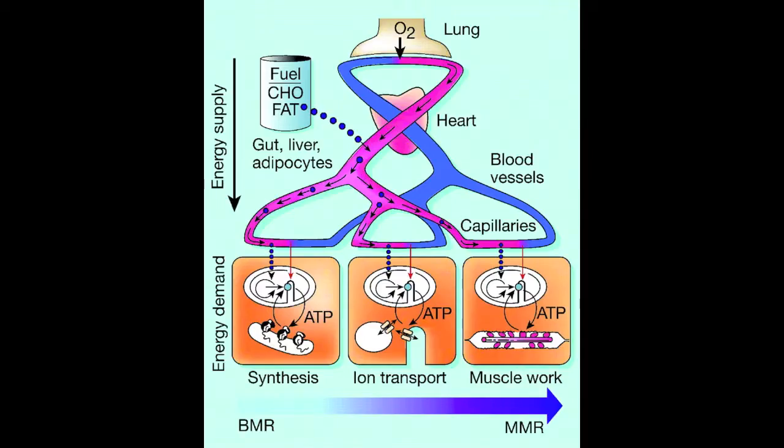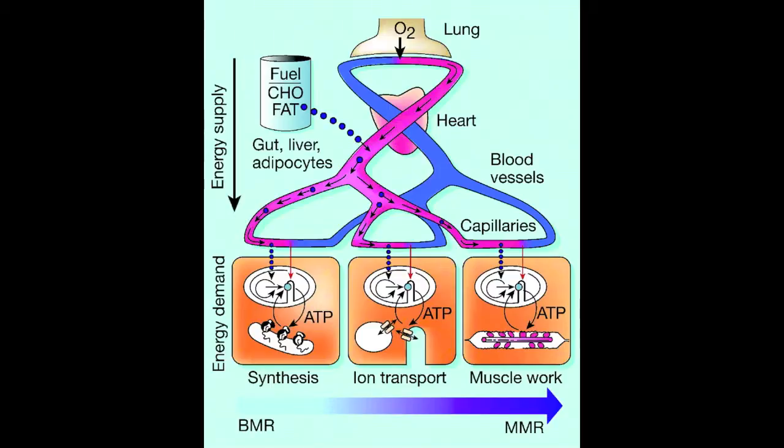When a weightlifter performs a hand clean, the ATP-PCR system is what supplies energy. ATP and phosphocreatine are readily available in the muscle cells when the body calls for very short and powerful movements performed for up to 10 seconds.